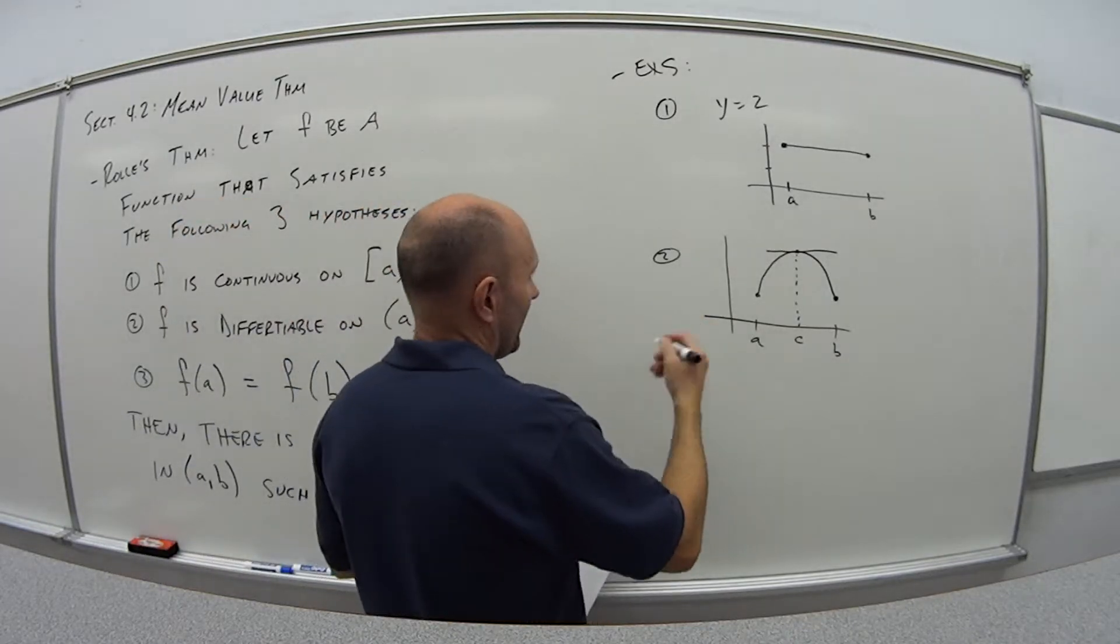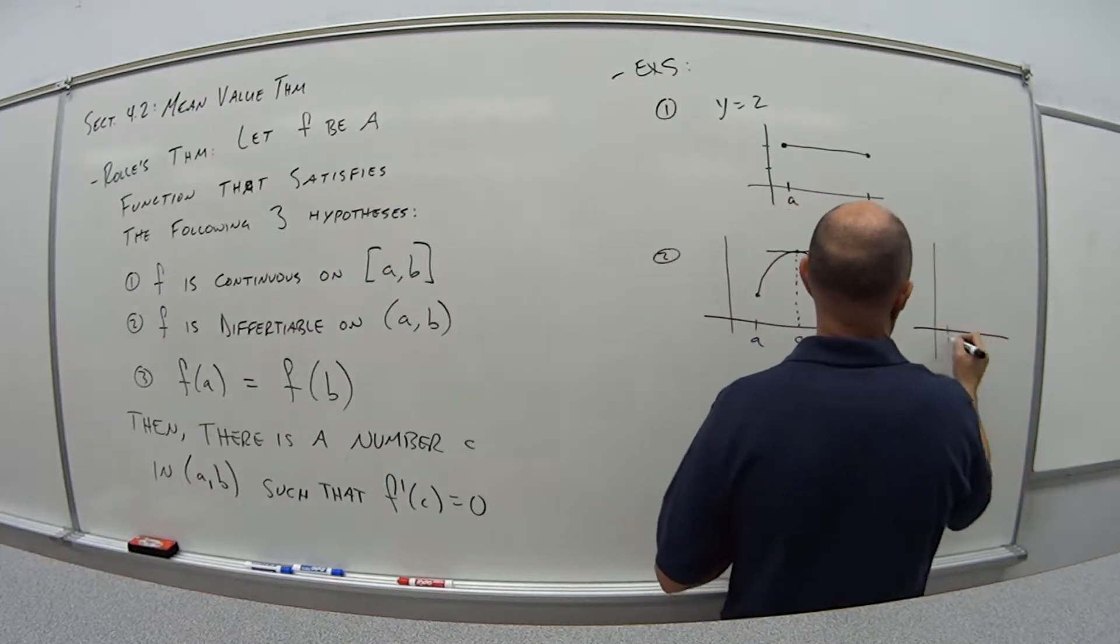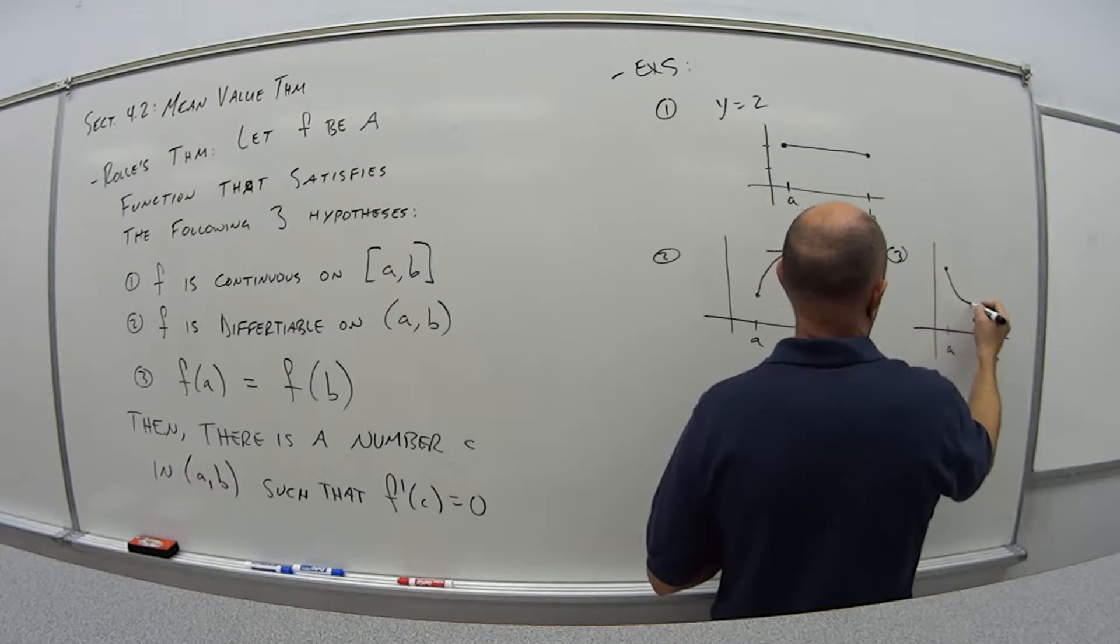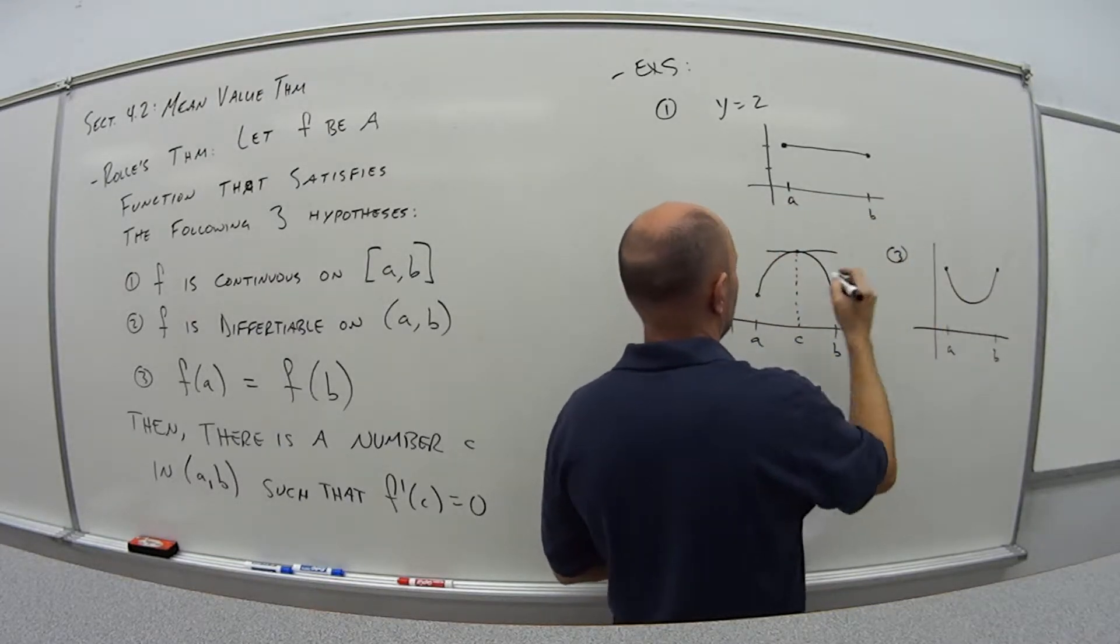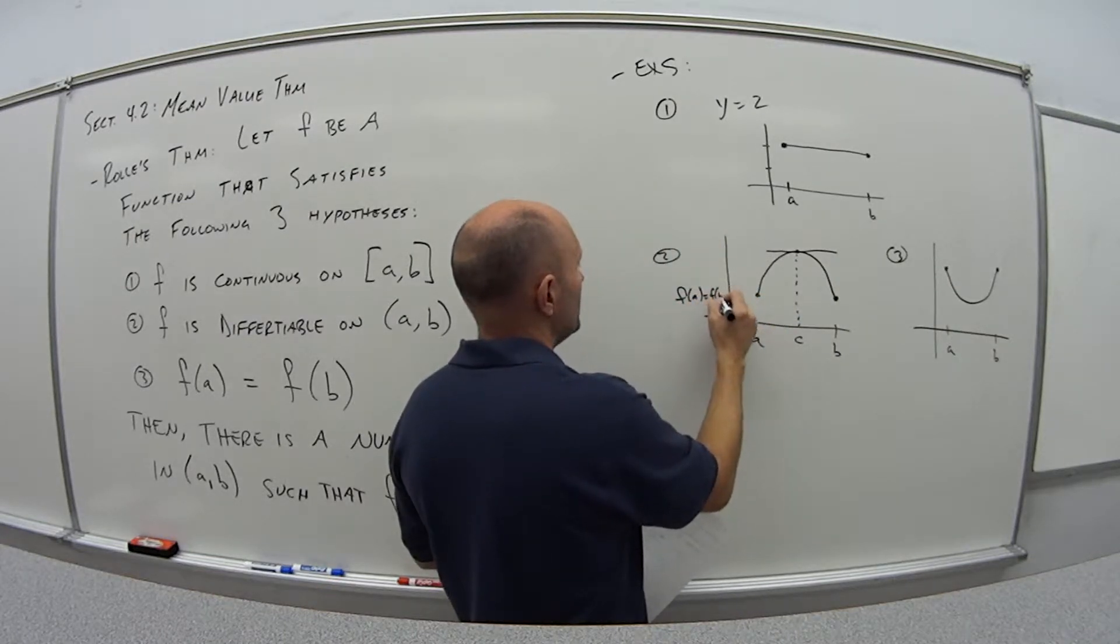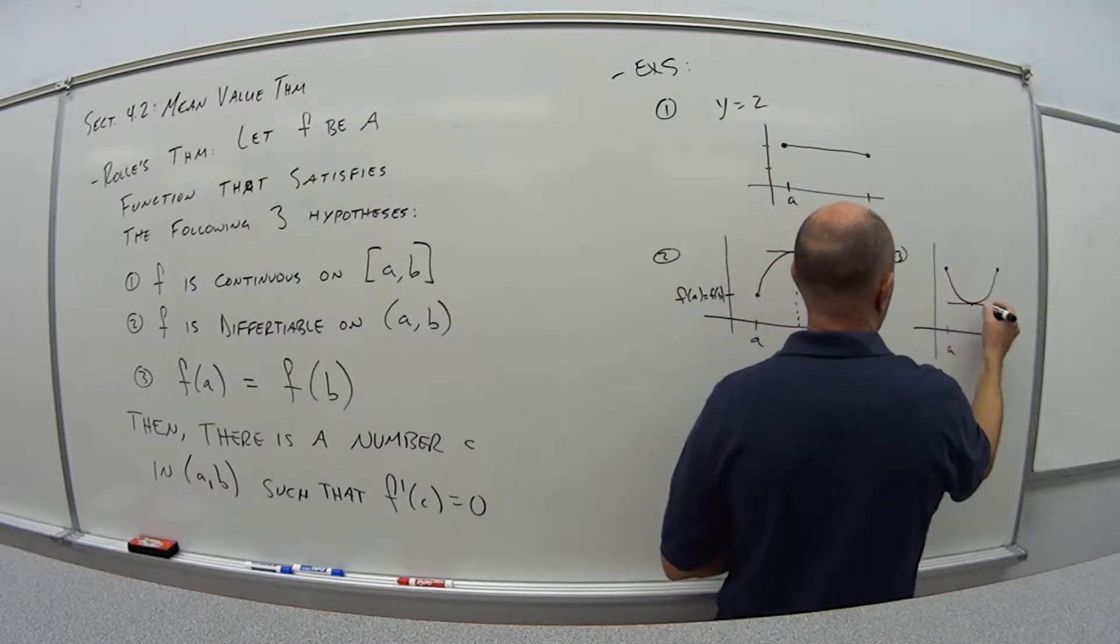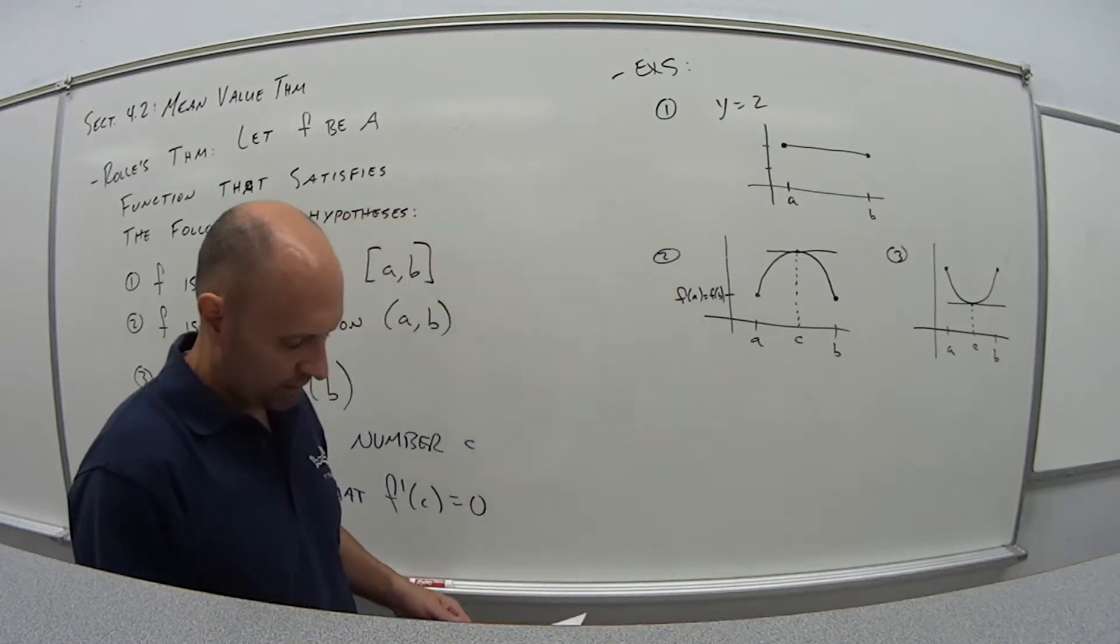You could also have, let's call it three, where the parabola is the other way around. So a to b comes down, goes back up at the end at the same value. This is f(a), which is equal to f(b). Same thing here, and again, there's going to be some point c where that derivative is equal to zero.